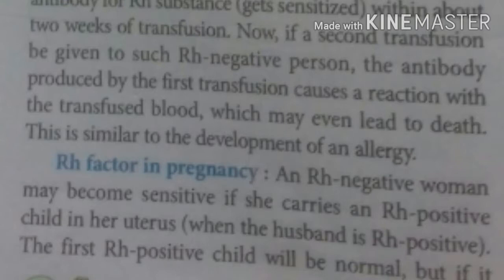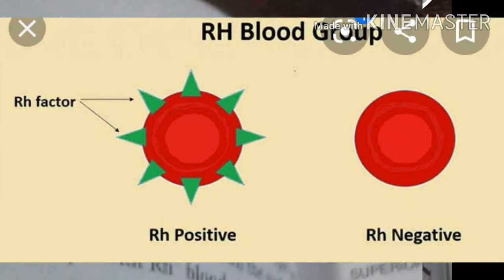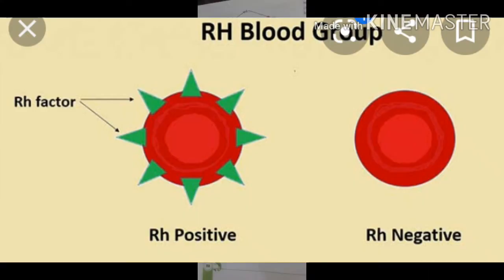If the blood group of the father is RH positive and the mother is RH negative, it can create complications in pregnancy, sometimes resulting in the death of the fetus. An RH negative woman may become sensitized if she carries an RH positive child in her uterus. The problem arises when the mother is RH negative and the father is RH positive.